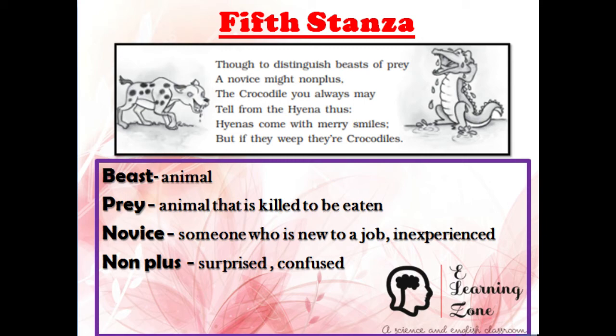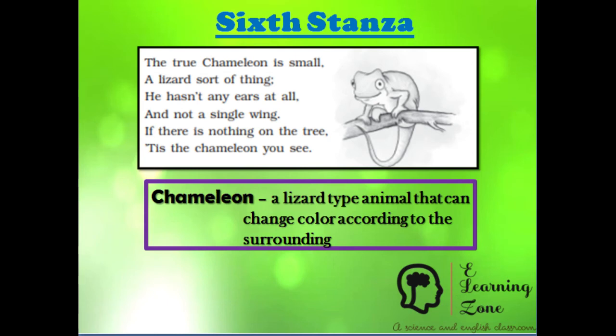Now the last stanza: 'The true Chameleon is small, a lizard sort of thing, he hasn't any ears at all and not a single wing. If there is nothing on the tree, there is the Chameleon you see.' The poet says the Chameleon resembles a lizard but there is a difference — the Chameleon has no ears or wings. It can change its color to match its background. If you see nothing on the tree, there is a Chameleon sitting there, having camouflaged itself.